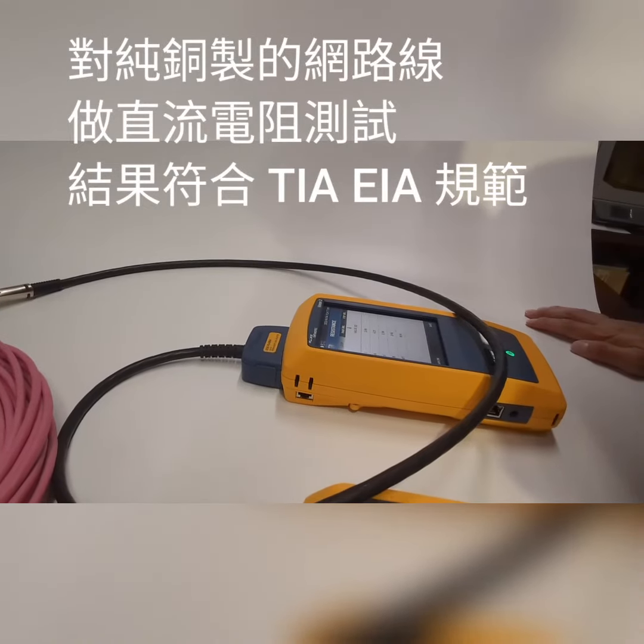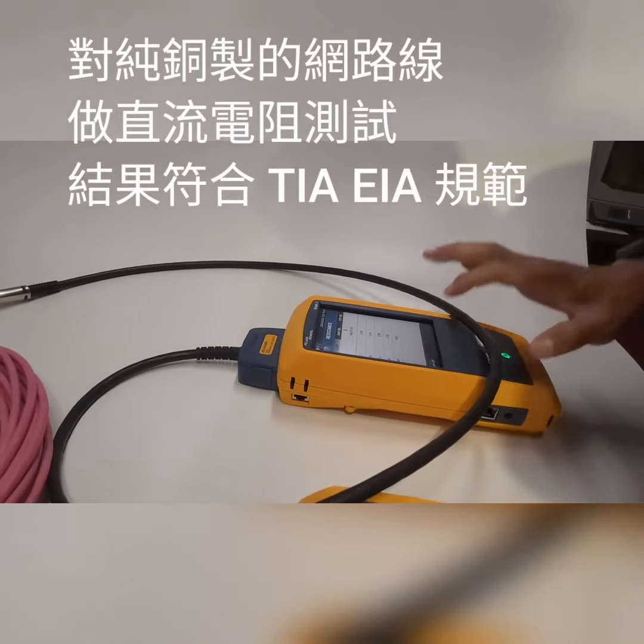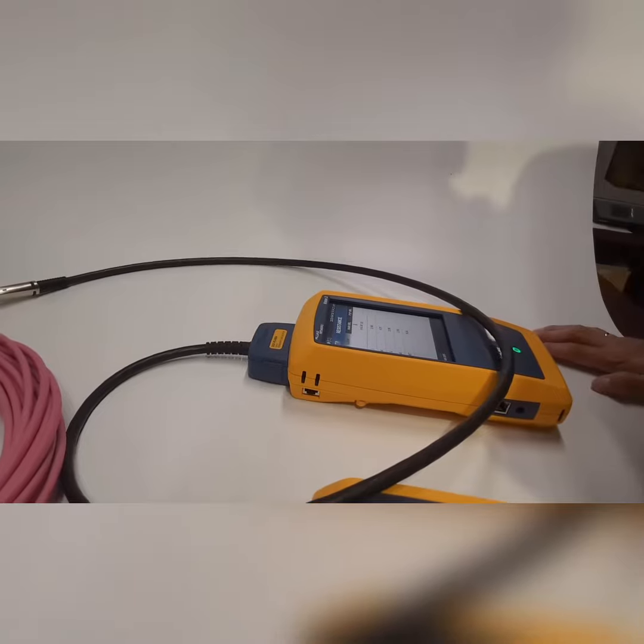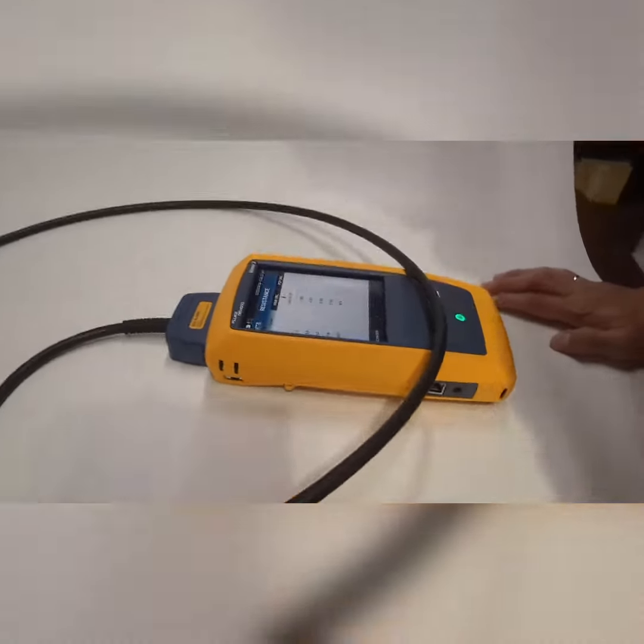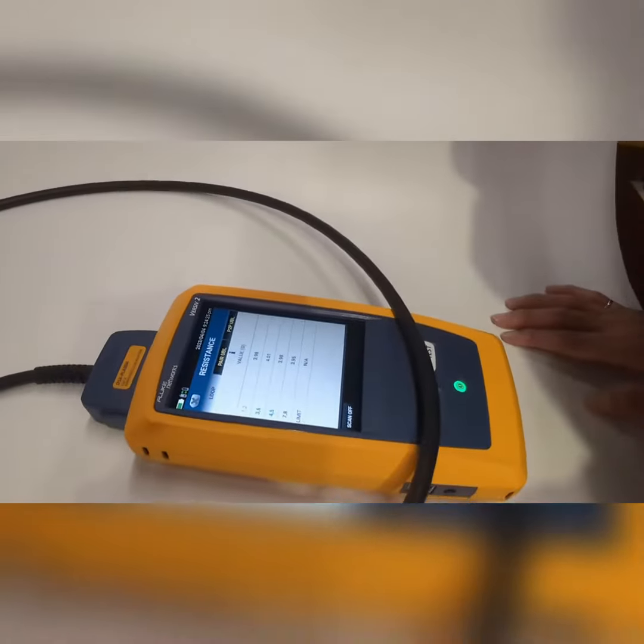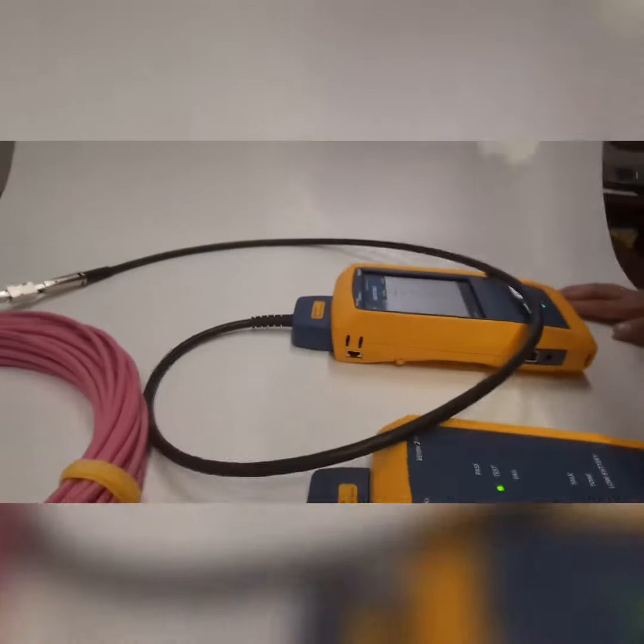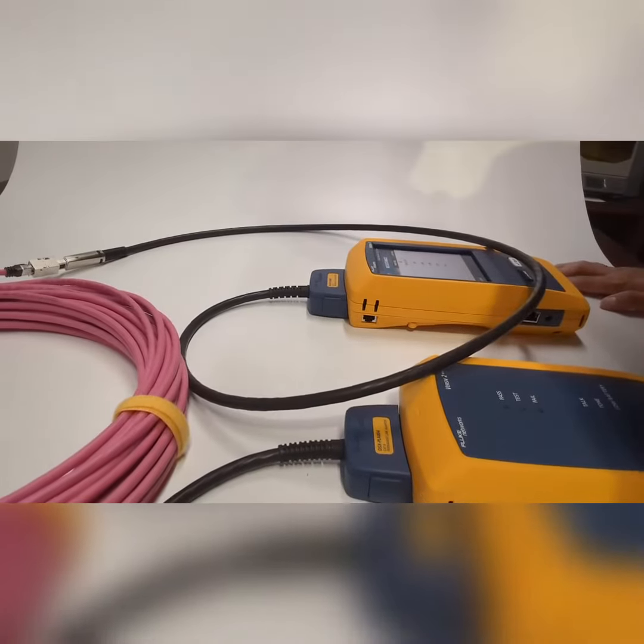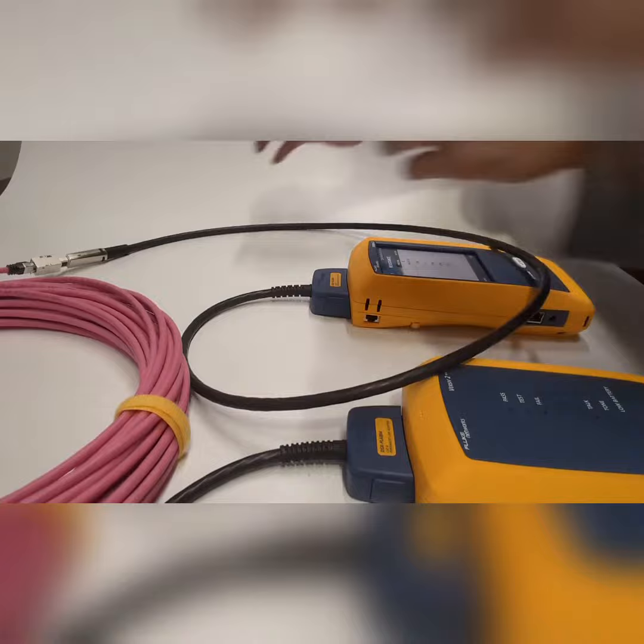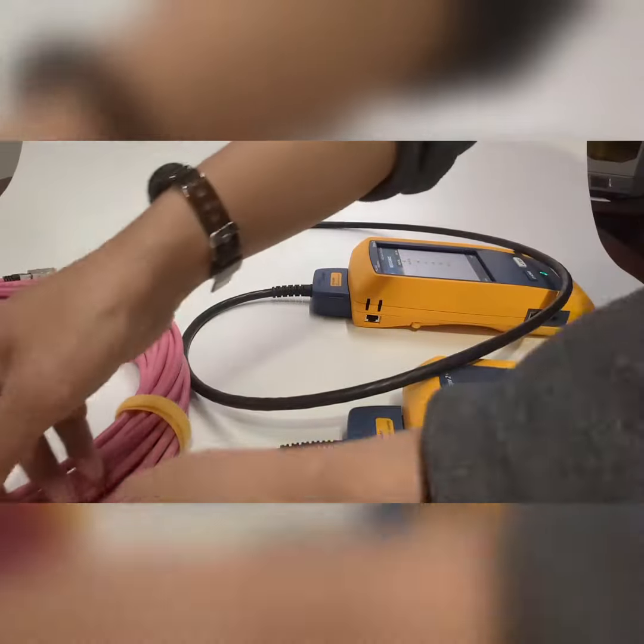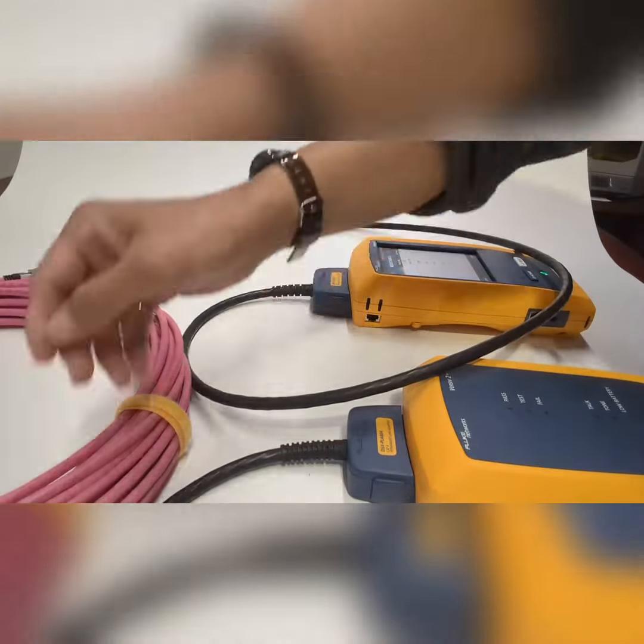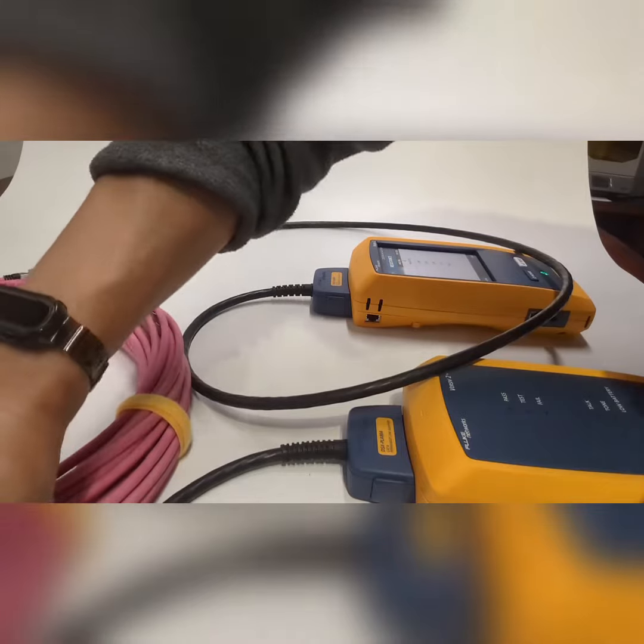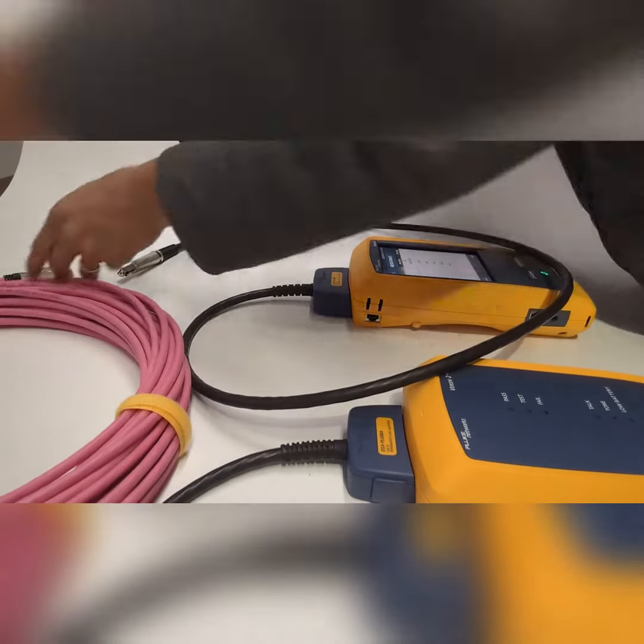We're testing a spool of copper cable. Let's use the Fluke tester to check the resistance value, and it's about four ohms. Now we're going to stop the Fluke and repeat the same test on the micro tester that we developed.